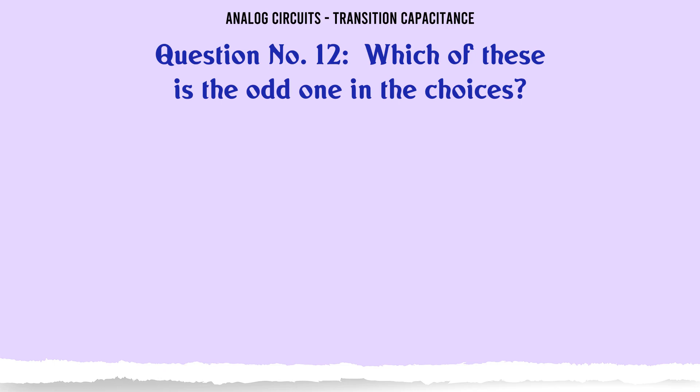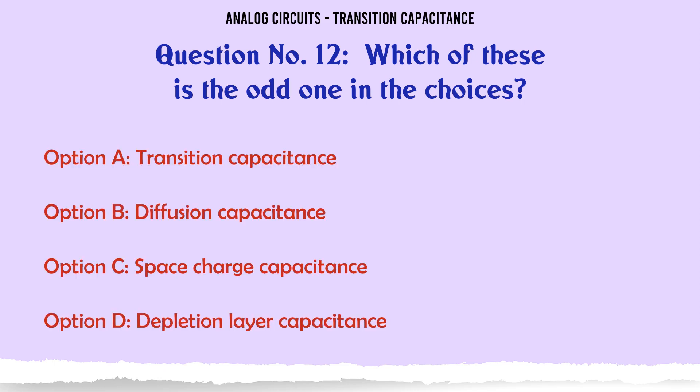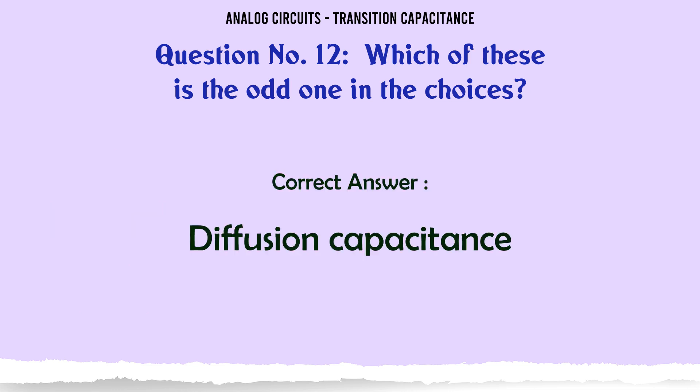Which of these is the odd one in the choices? A: Transition capacitance, B: Diffusion capacitance, C: Space charge capacitance, D: Depletion layer capacitance. The correct answer is Diffusion capacitance.